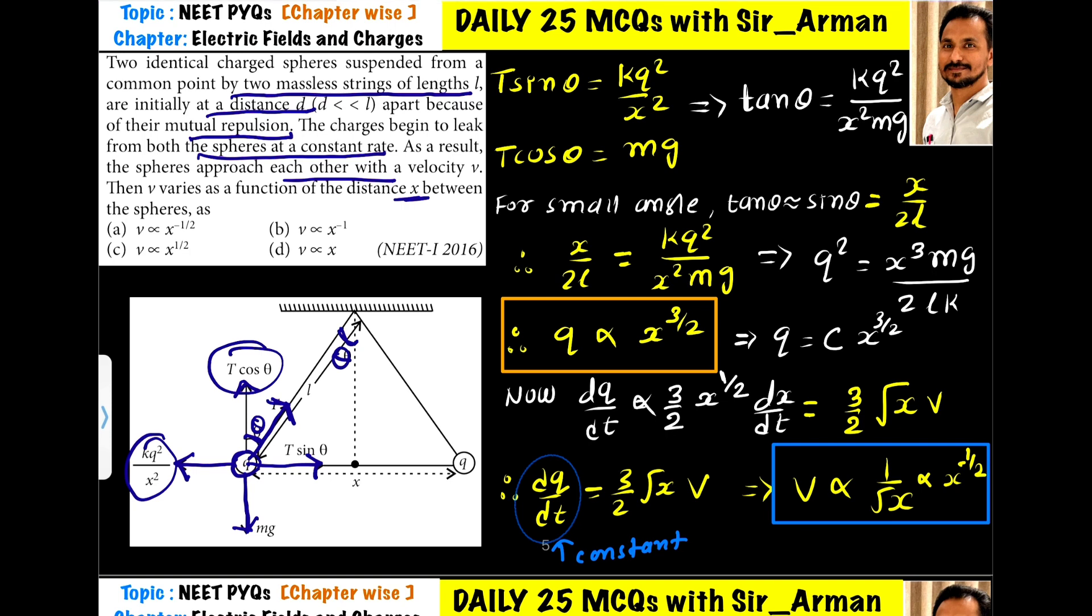T cos θ is balanced by mg, and the electrostatic force is balanced by T sin θ. So T sin θ equals kq²/x², and T cos θ equals mg. If we take the ratio, T cancels out. sin θ/cos θ is tan θ, which equals kq²/(x²mg). This is one expression we have to remember: tan θ = kq²/(x²mg).